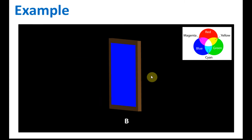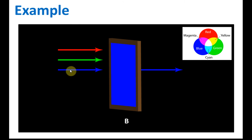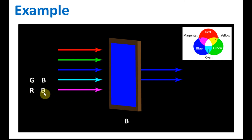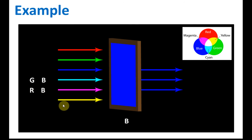For a blue filter, red and green will be blocked and only blue can pass through. Cyan is a combination of green and blue — only blue is allowed to pass through, green will be blocked, so the light that comes out is blue. Magenta is red and blue — blue can pass through, red will be blocked, so blue color light comes out.